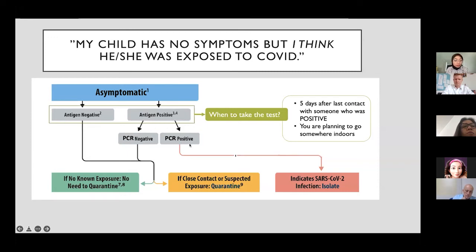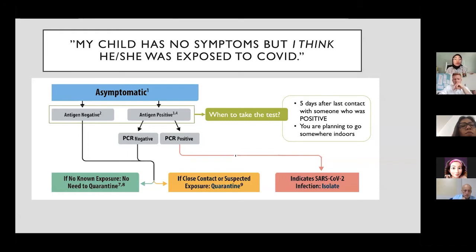If a PCR is positive, that is a definite infection and the person needs to isolate. If a PCR is negative without any known exposure, they do not need to quarantine. It really depends on whether there was a close contact or exposure to interpret the results of these tests.